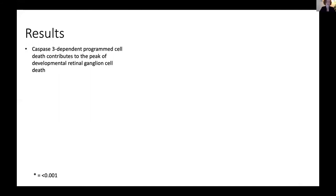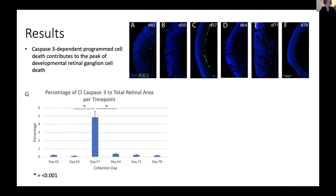Finally, caspase-3-dependent programmed cell death contributes to the peak of developmental retinal ganglion cell death. On the immunofluorescent images, cleaved caspase-3 is indicative of programmed cell death and is stained green. Our results indicate very minimal levels of caspase-3 activation between days 42 and 50 of retinal organoid development, and then a sudden peak at day 57 that is extremely significant. This is seen with positive staining on immunofluorescent image C at the top of the screen. These results coincide with the sudden decrease in ganglion cell numbers that we observed and support the hypothesis that caspase-3-dependent cell death plays a major role in the reduction of retinal ganglion cell numbers during the early wave of cell death in humans.